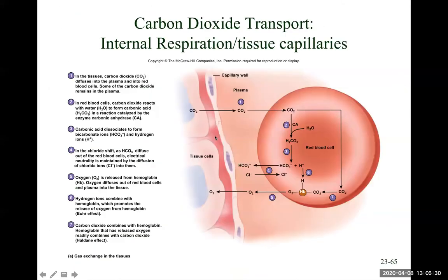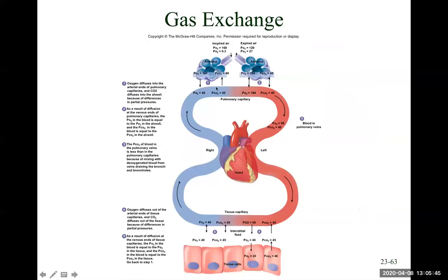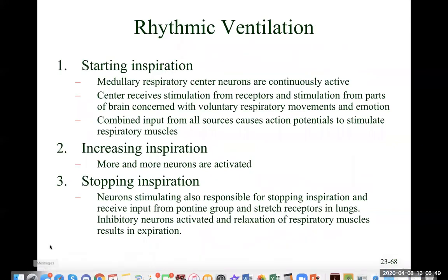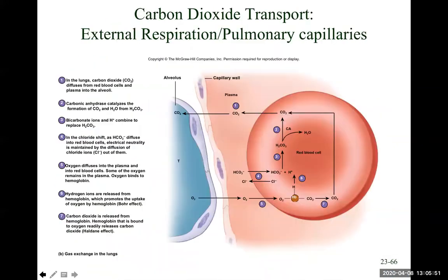Now, as we go through carbon dioxide transport, keep in mind that unlike oxygen, carbon dioxide is really diffusible — it has an easier time getting through the membrane. And there are more than one ways of taking carbon dioxide from your tissues to the bloodstream.